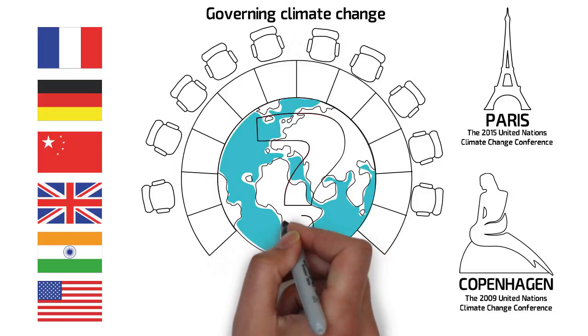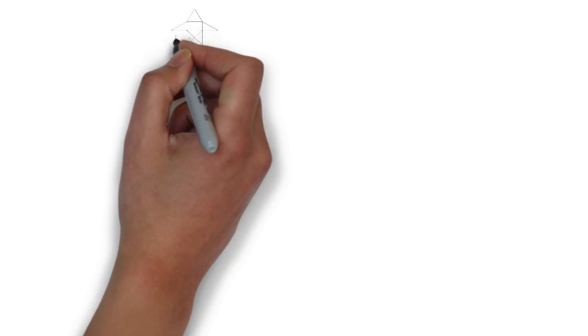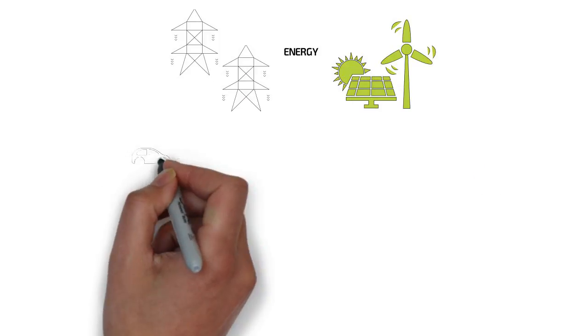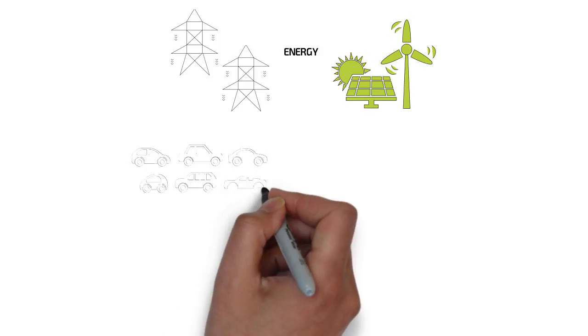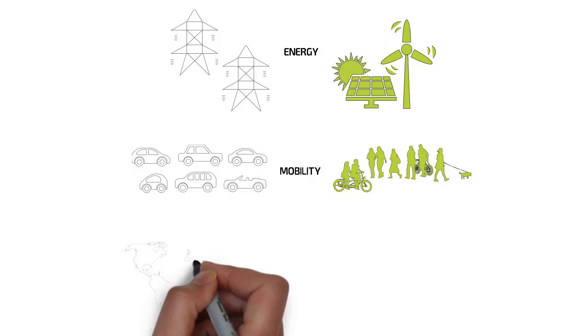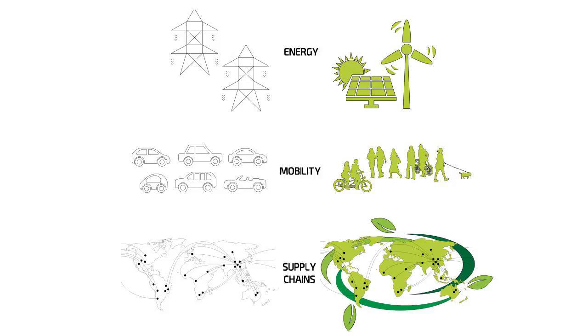But is global level negotiation the only way in which climate change is being addressed? At the same time as the global negotiations have been unfolding, there have also been many forms of climate initiatives and actions occurring in highly diverse ways. For example, actions have been occurring in different sectors, such as energy production and use, mobility and urban design, and in global supply chains.